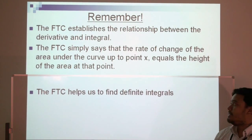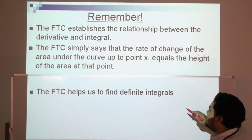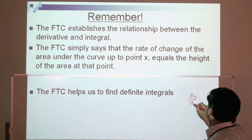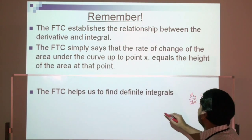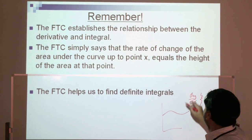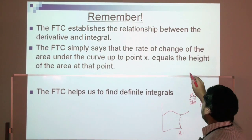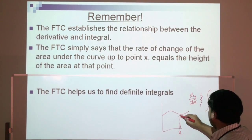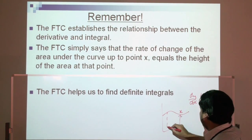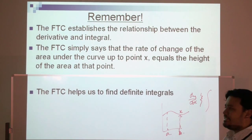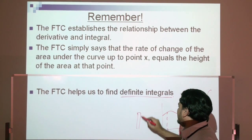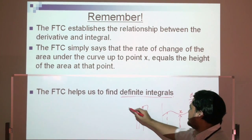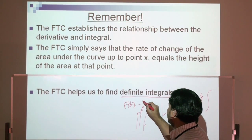To summarize: the FTC establishes the relationship between derivatives and integrals. It simply states that the rate of change of the area under the curve up to point x equals the height of the curve at that point. It also helps us find definite integrals easily — instead of using Riemann rectangles, we just subtract the antiderivative at the upper limit minus the lower limit.